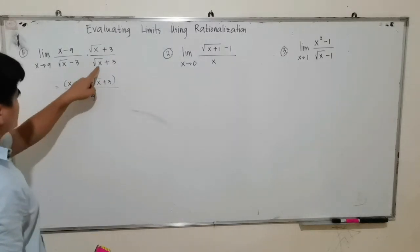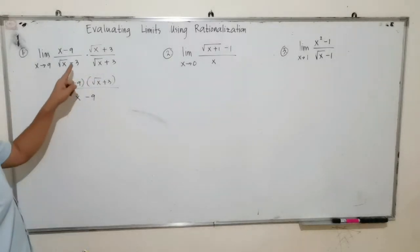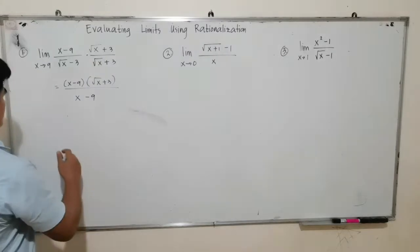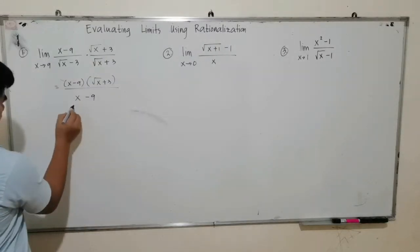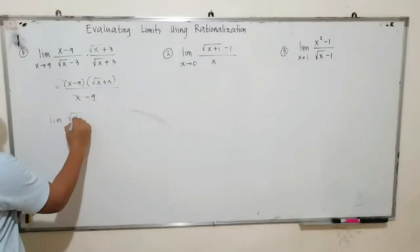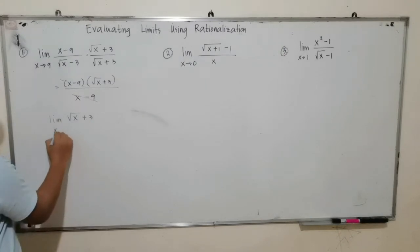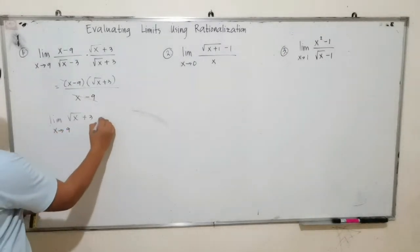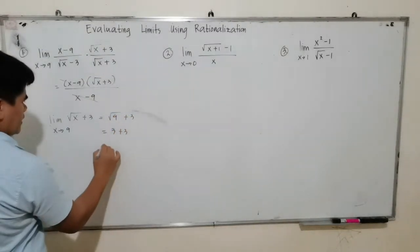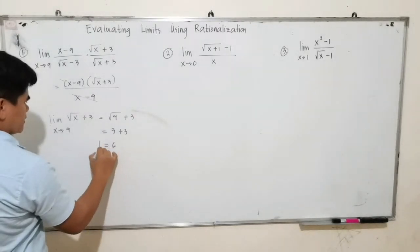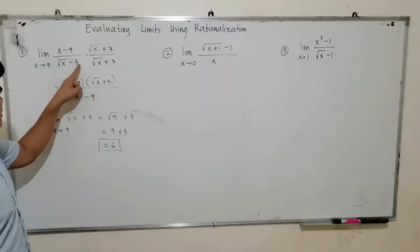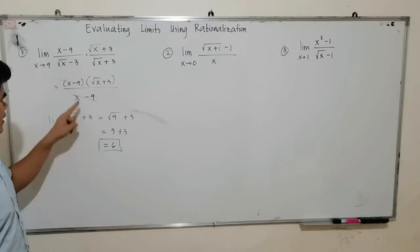Square root of x times square root of x is x, and negative 3 times positive 3 is negative 9. We can then cancel out x minus 9. What is left is the limit of square root of x plus 3 as x approaches 9. Therefore, that will be square root of 9 plus 3, which is 3 plus 3, equal to 6. The limit of (x minus 9) over (square root of x minus 3) as x approaches 9 is 6.